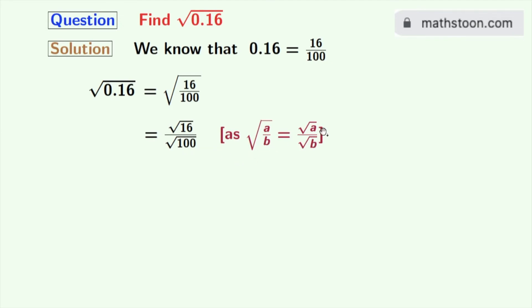Here a is 16 and b is 100. As we know that square root of 16 is 4 and square root of 100 is 10, so from this we get 4 by 10.